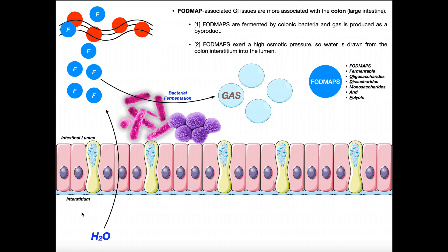The colon's job is to absorb water, so there is easy transit for water across this membrane. But if we put a lot of FODMAPs in the lumen and they have high osmotic pressure, they attract a lot of water. Now instead of the large intestine absorbing water from the lumen into the interstitium and then the blood, water moves the opposite direction — drawn from the interstitium into the intestinal lumen. The contents of the large intestine now have a lot more water, causing watery stool, also known as diarrhea.